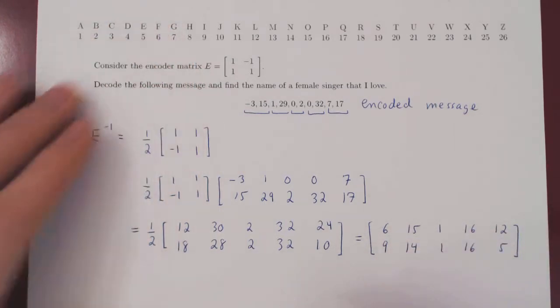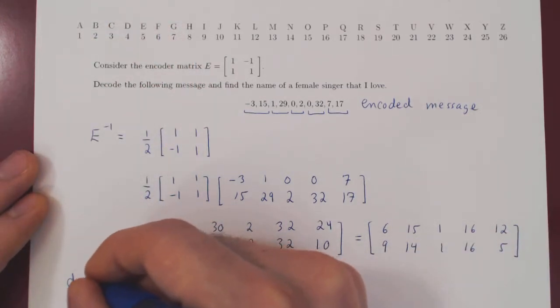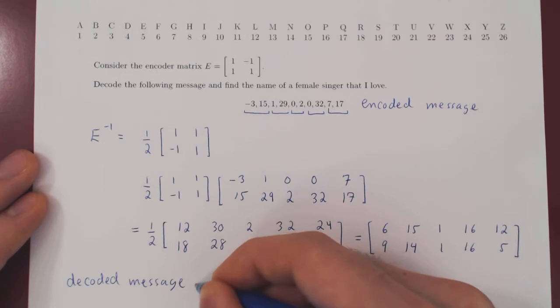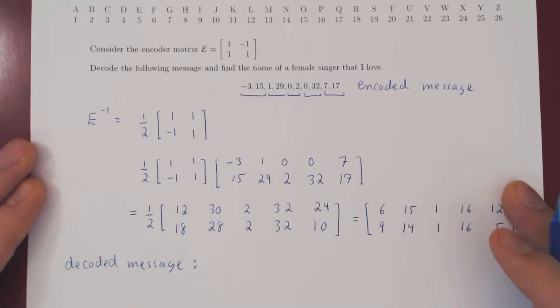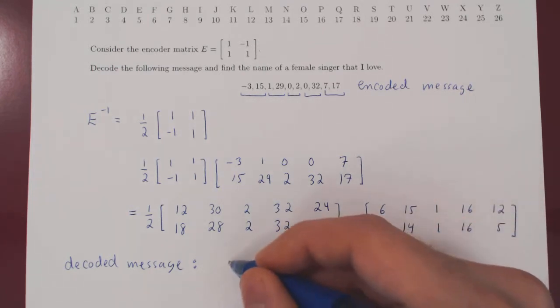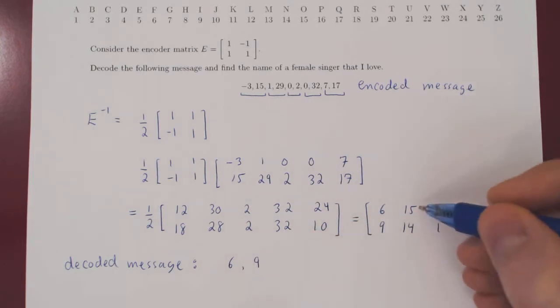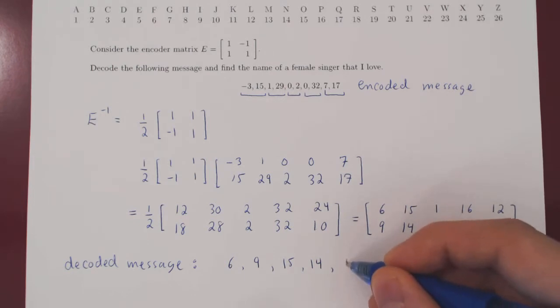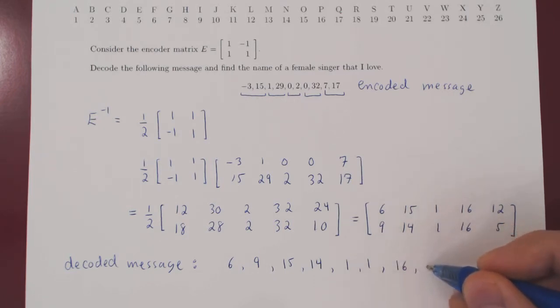And I will have the decoded message. Well, the first column becomes the first string of two characters. So 6, 9. The second column, the second string. 15, 14. Third column, third string. 1, 1. Fourth column, fourth string. 16, 16. And fifth column, fifth string. 12, 5.